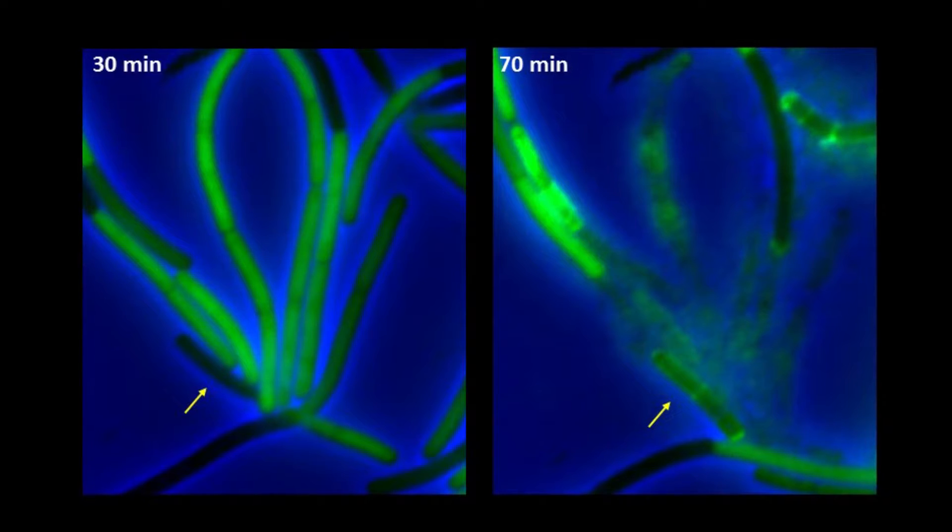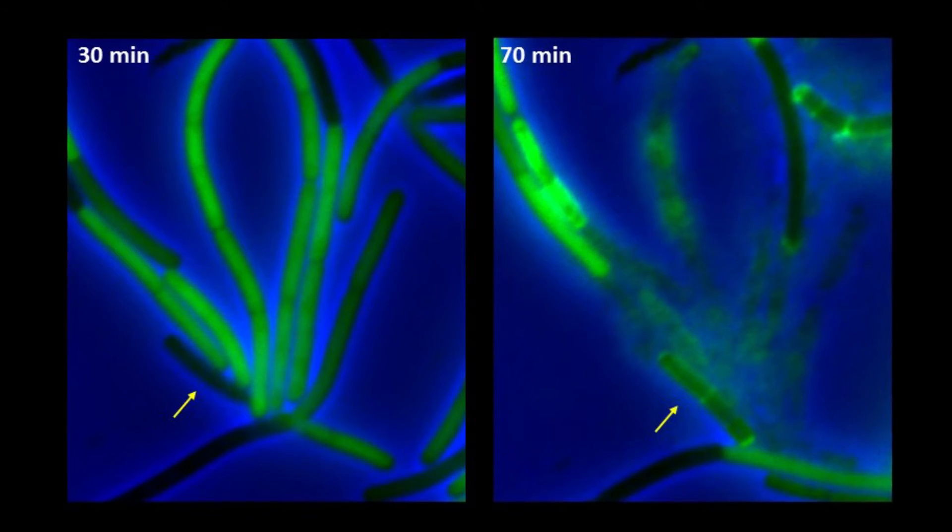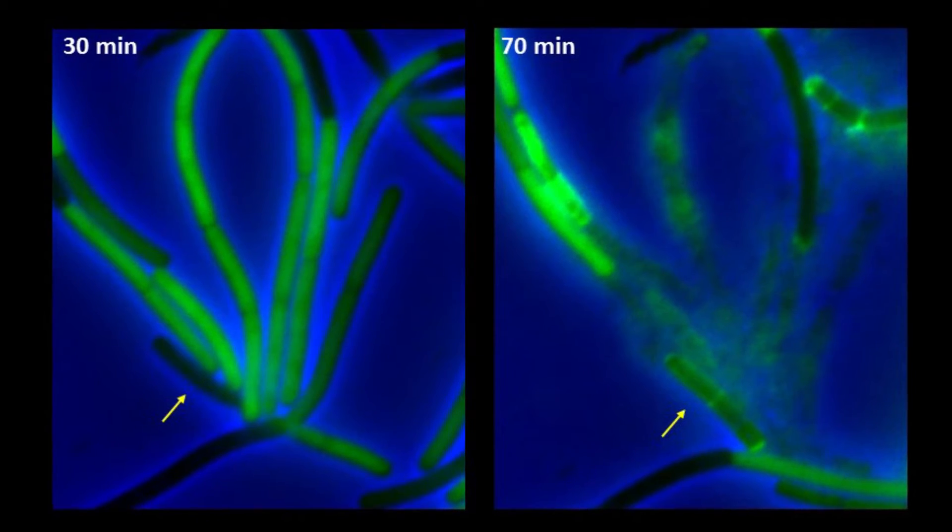To investigate this possibility, we constructed SPP1 phage harboring a YFP-labeled lysine protein. You can see here the expression of the lysine upon phage infection and the consequent cell lysis. Upon release, the lysine was also detected around nearby uninfected cells, suggesting that LFW is a possible mechanism.